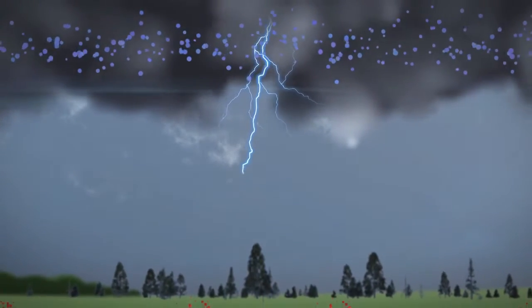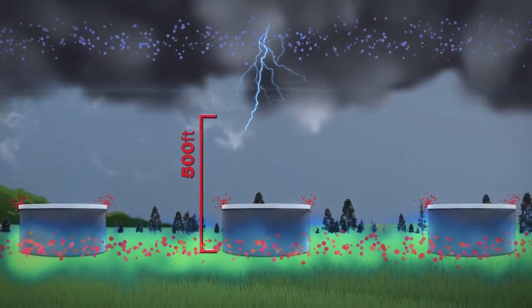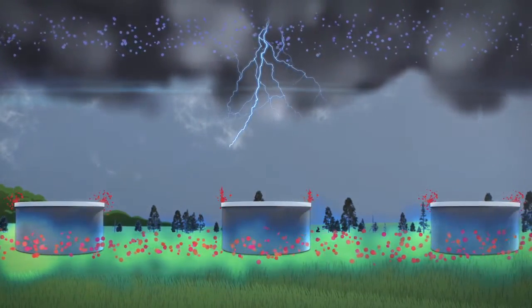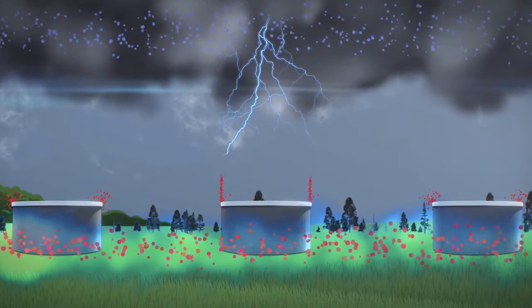When stepped leaders reach to within about 500 feet of the Earth's surface, their electrical attraction pulls streamers of ground charge off various structures and objects.